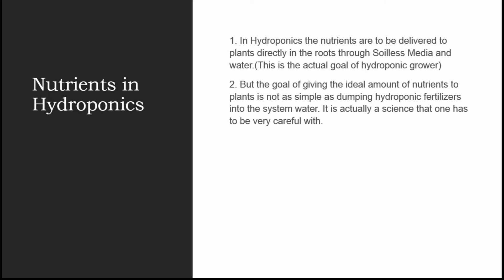In hydroponics, the nutrients are to be delivered to plants directly in the roots through soilless media and water. This is the actual goal of a hydroponic grower. But the goal of giving the ideal amount of nutrients to plants is not as simple as dumping hydroponic fertilizers into the system water — it is actually a science that one has to be very careful with.